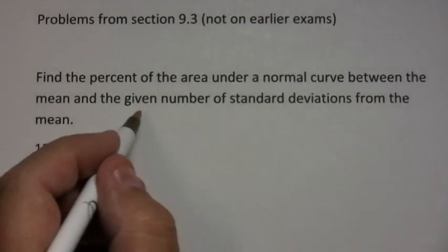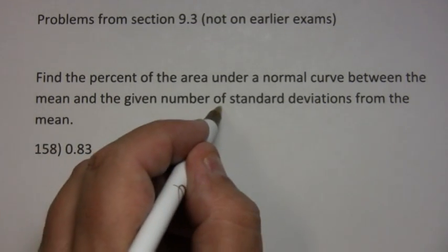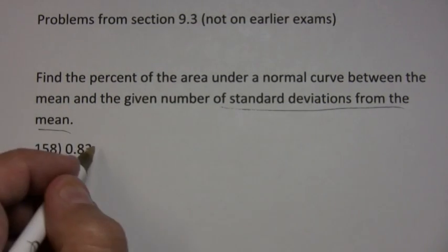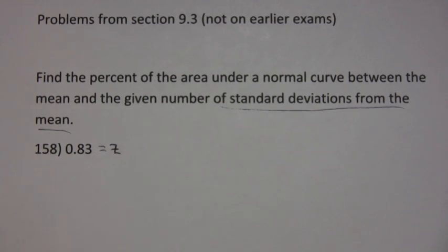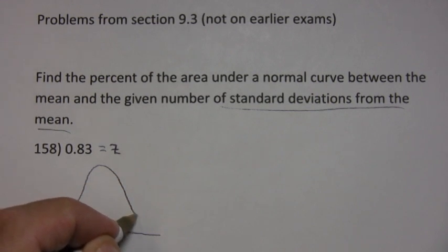And we want to do 0.83 standard deviations from the mean. Now, when it says standard deviations from the mean, you know you're working with a Z value. Those Z scores are measured with standard deviations from the mean. Now, you don't necessarily have to draw a picture, but in my mind, it will be a lot clearer and make a lot more sense if you do.